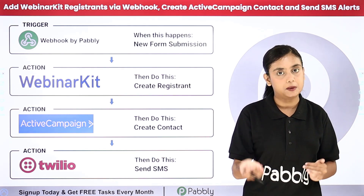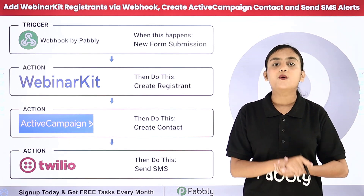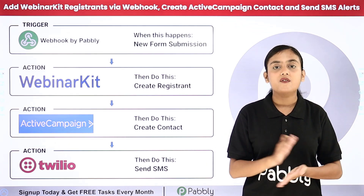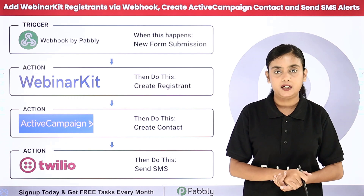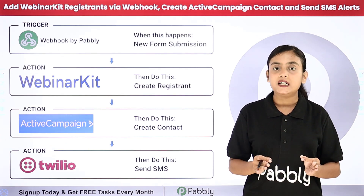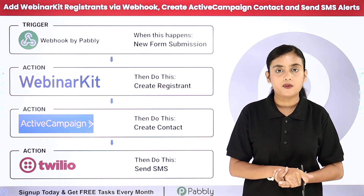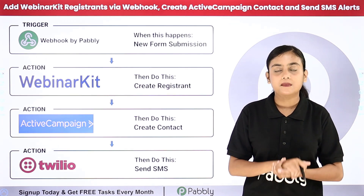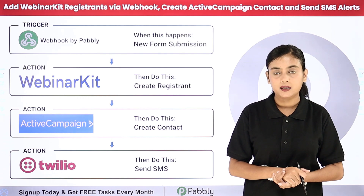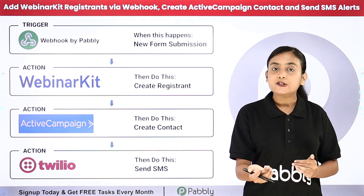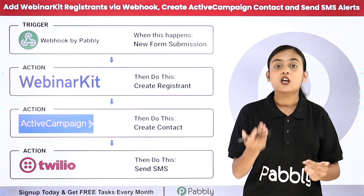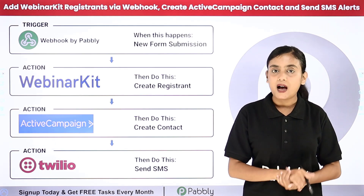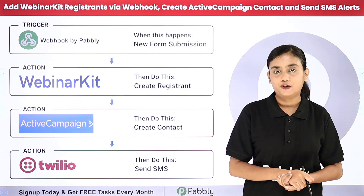As soon as a new form submission is done and we receive a webhook response, I want to create that participant as a registrant in my WebinarKit account. I also want to create a contact of that registrant in my ActiveCampaign account, and send them a follow-up SMS alert. Doing all of this manually would take a lot of time.